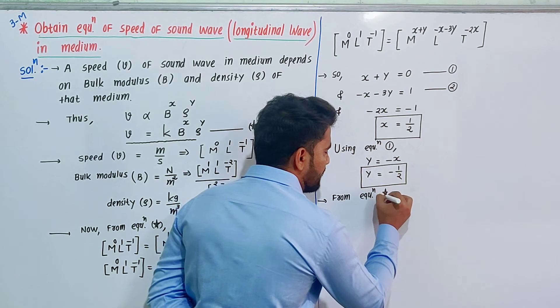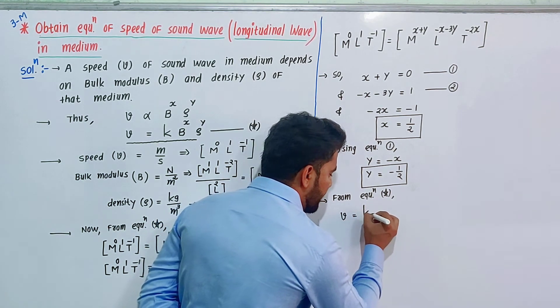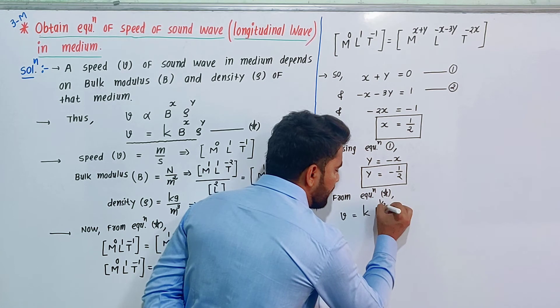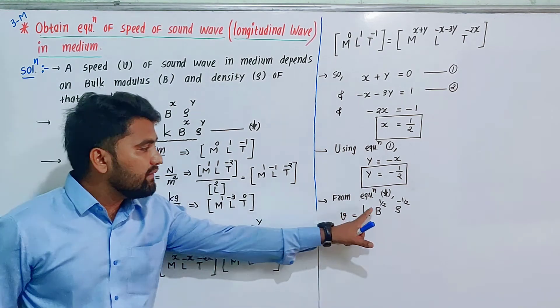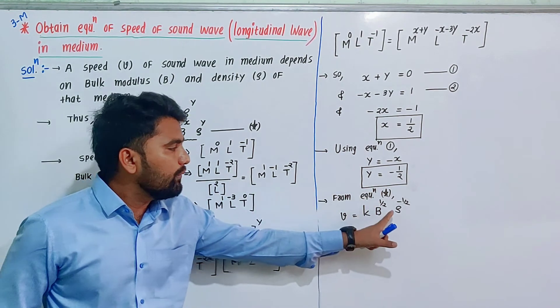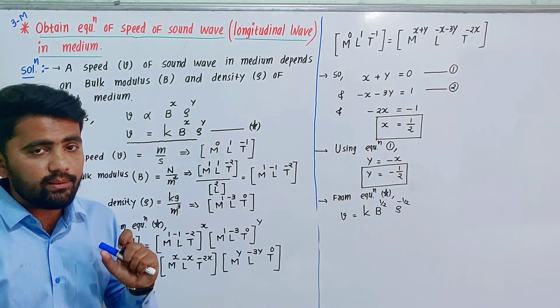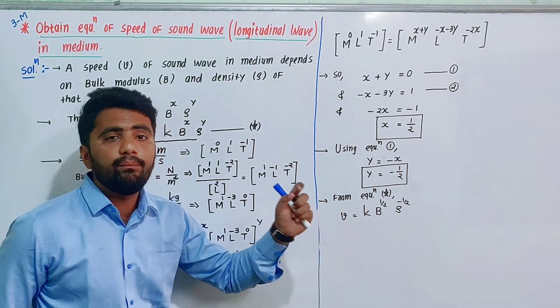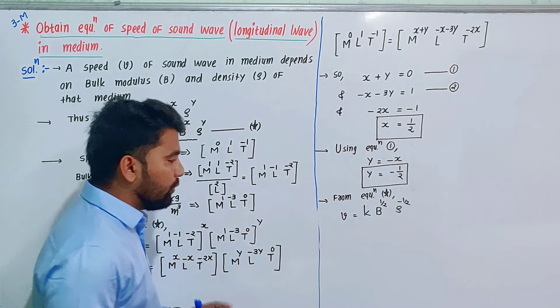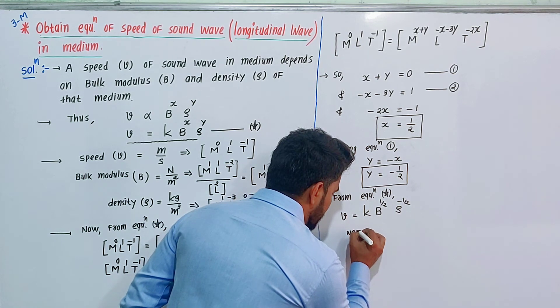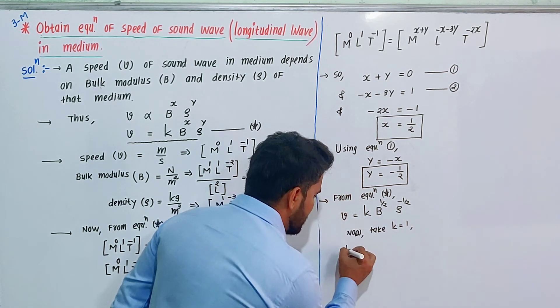These x and y values we substitute into equation star. From equation star: V equals K times B raised to one half times ρ raised to minus one half. B to one half is root B, ρ to minus one half goes to denominator as root ρ. Experimentally, K is considered one.